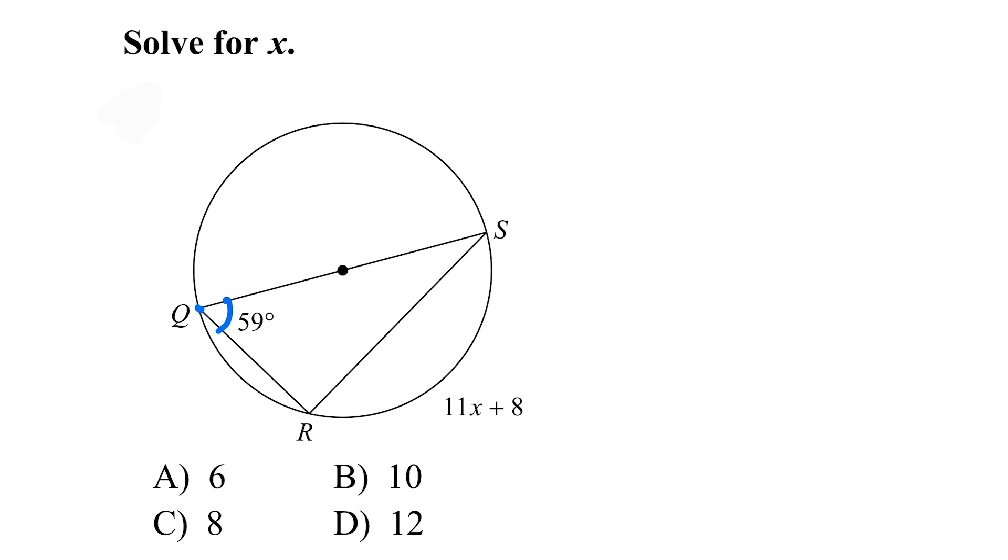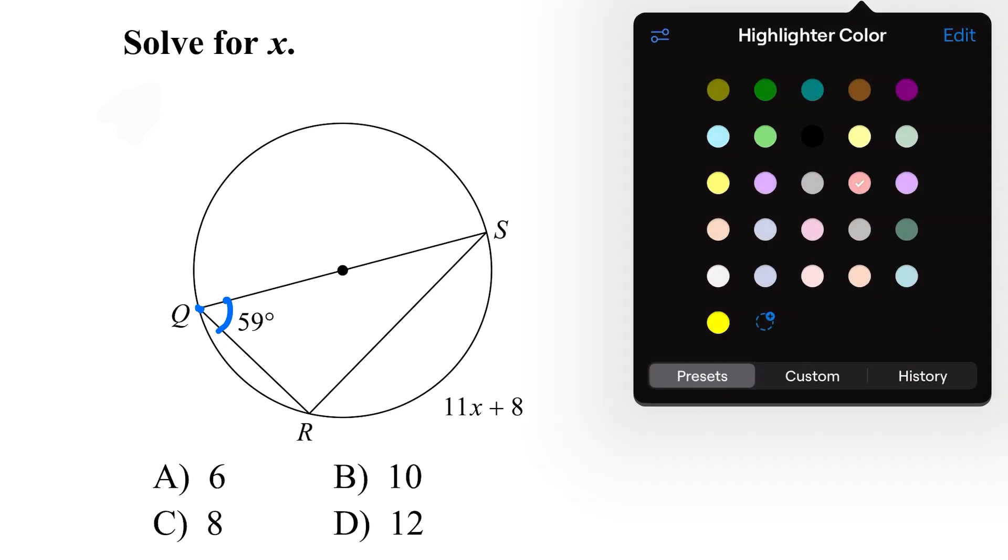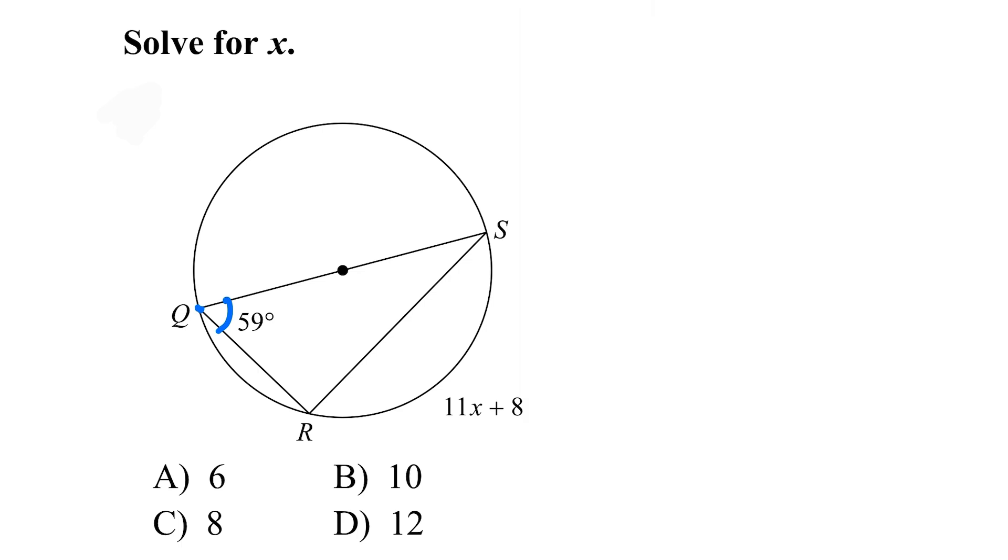Inscribed angles are actually half the size of their intercepted arc. So this arc right here, the 11x plus 8, is twice as big as the 59.